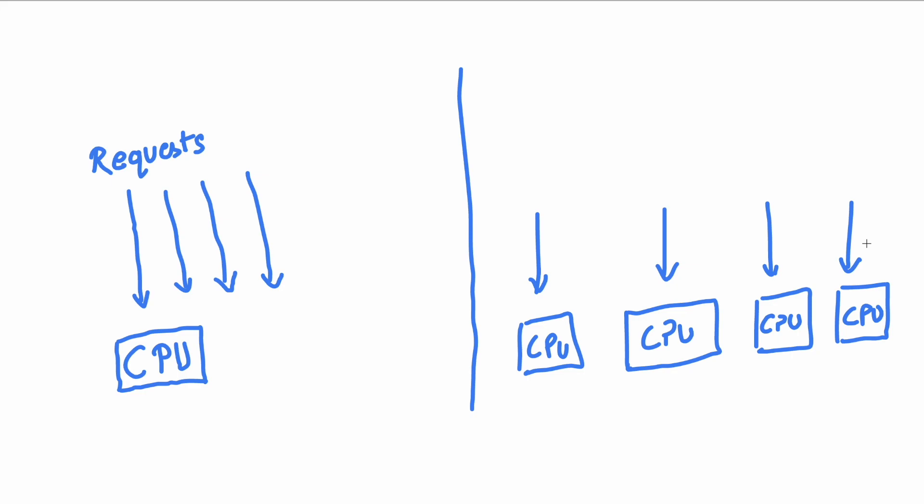But there is also a problem — we have a resource limitation. You can't assign as many CPUs to as many requests in the real world. I was taking an example of only four requests, but it can be 400 also. So there is obviously some kind of threshold we have to manage, and after that we cannot actually spin up as many CPUs as we want. So this was the thread-per-request model, and this particular situation on the right is actually known as parallel processing.